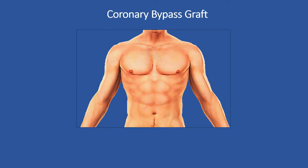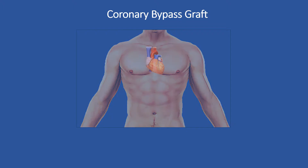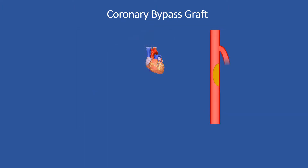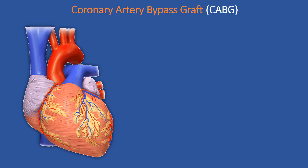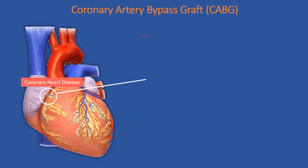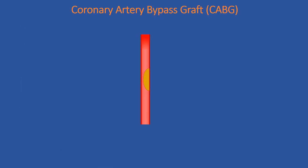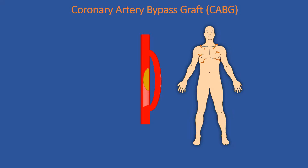This video describes the medical procedure coronary bypass graft. Coronary artery bypass graft, also called CABG, is a surgical procedure to treat coronary heart disease. This procedure is carried out to improve blood flow and oxygen supply to the heart by diverting blood flow around the narrowed or clogged part of the major arteries. This improves breathlessness and chest discomfort and reduces the risk of heart attack.